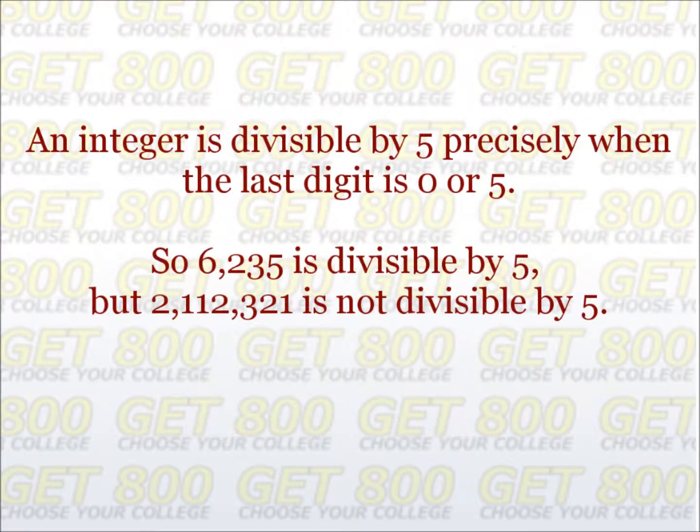For our next rule, divisibility by 5: an integer is divisible by 5 precisely when the last digit is a 0 or a 5. So the number 6,235 is divisible by 5 because it ends in a 5, but the number 2,112,321 is not divisible by 5 simply because it ends in a 1.